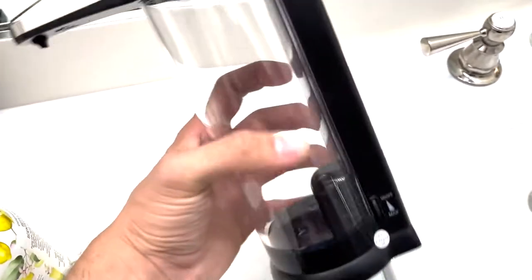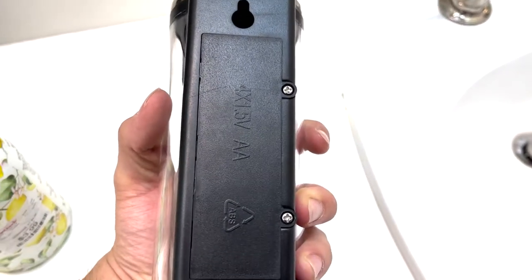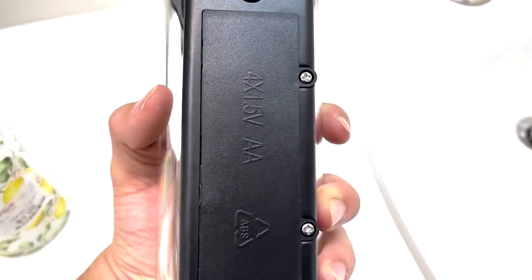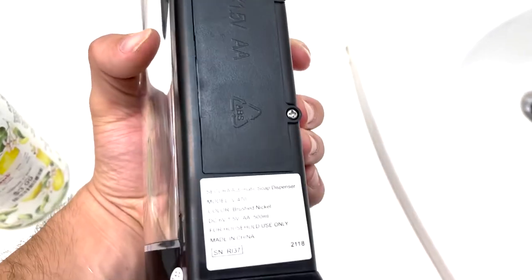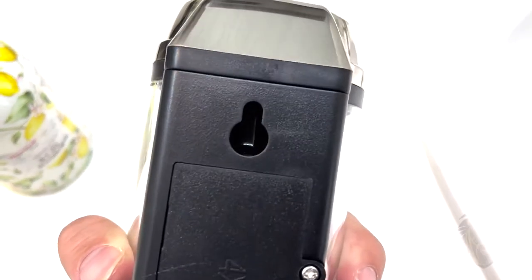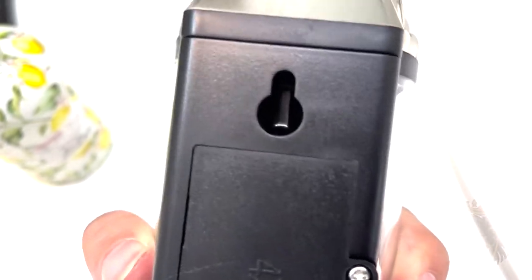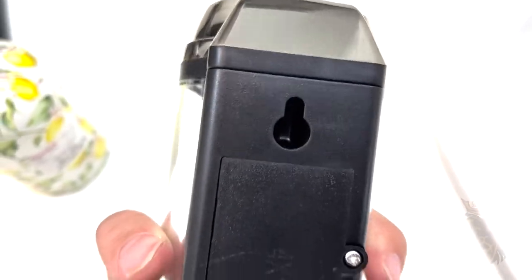So the first thing you should know about this is it does take batteries. Prepare four AA batteries for this and you need a screwdriver to take it off. You can also mount this on your wall right here if you have the appropriate mounting equipment.